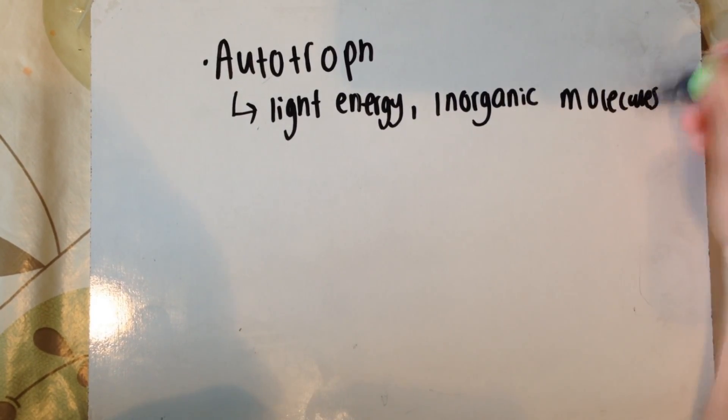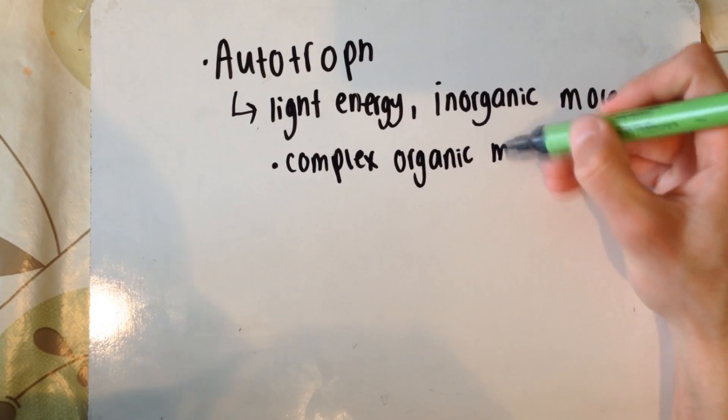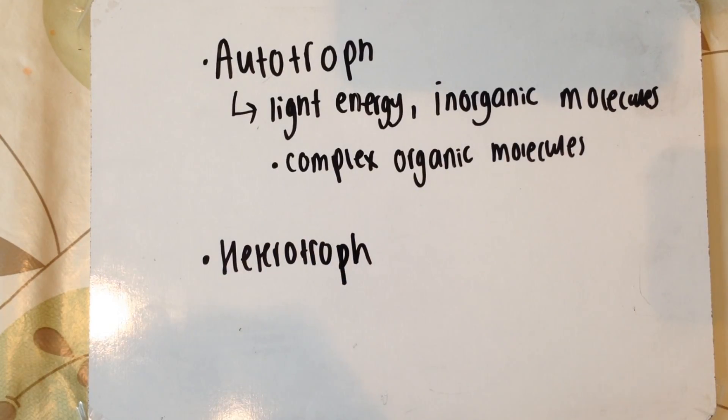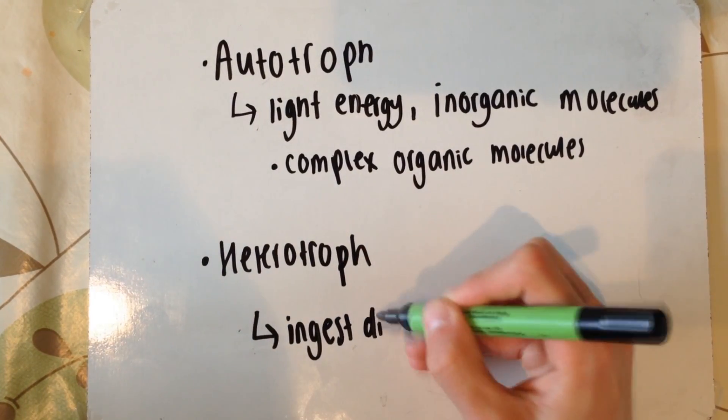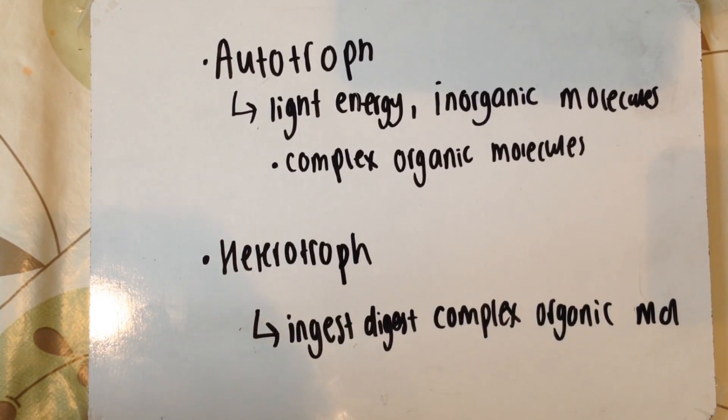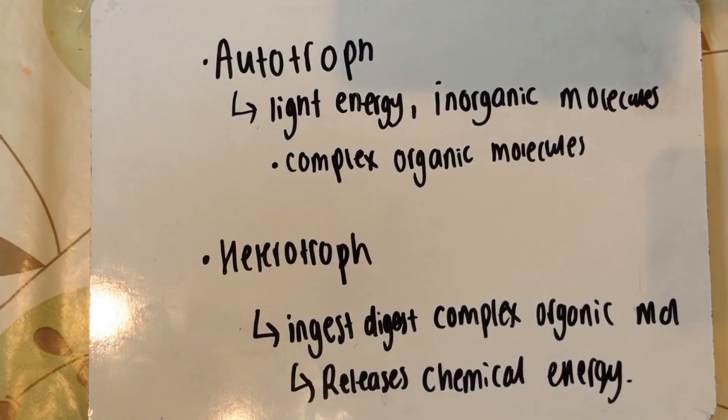Autotrophs are organisms that use light energy as well as inorganic molecules and with this they synthesize complex organic molecules, whereas heterotrophs feed on the autotrophs. Therefore, they ingest and digest these complex organic molecules which releases the chemical potential energy stored inside them.